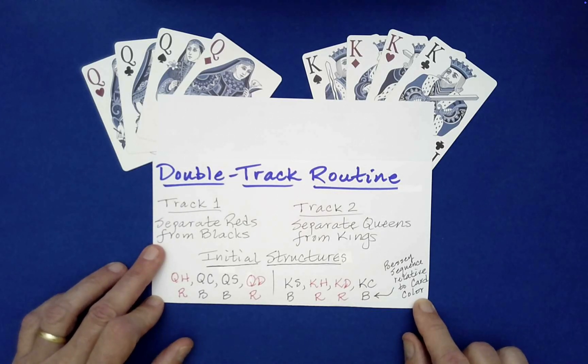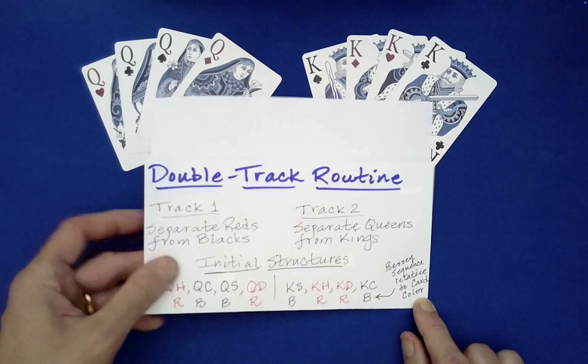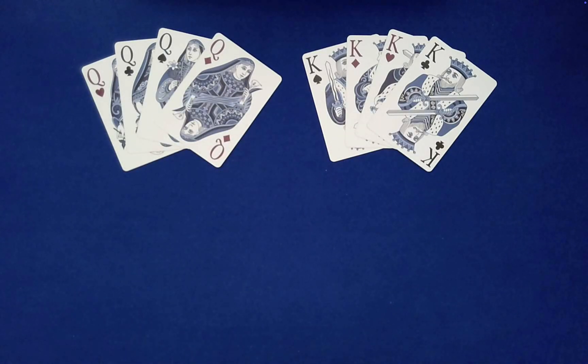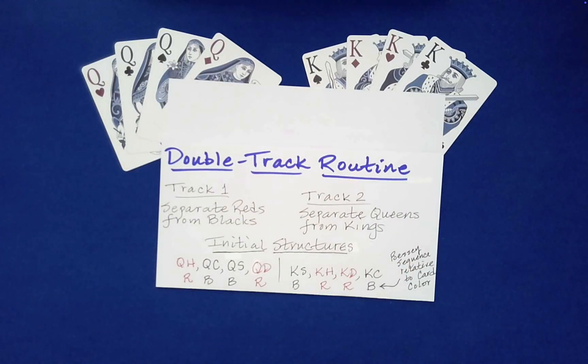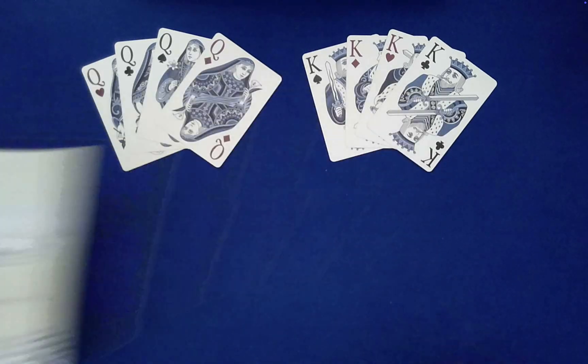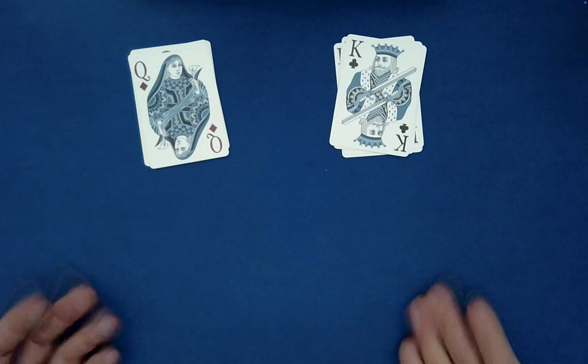And then for track two, we'll just have to perform one additional but simple step to put it into the same kind of organization relative to queens and kings. So let's get started. Let's say the spectator decides that they want to separate the queens from the kings. So essentially, they've asked for track two first. That's fine. So what we can do is we have them randomly stack these two piles. It's a free choice.